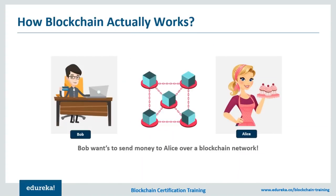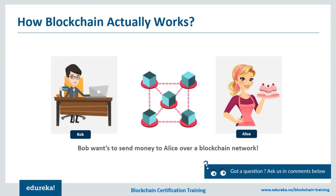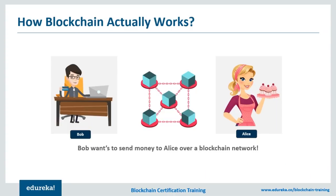Now let's see what happens under the hood in a computer when you initiate a transaction on a blockchain network. When Bob decides to send Alice the money, he publicly broadcasts his intent to the network. But how is the network supposed to believe the integrity of the message? Anyone on the network could have just broadcasted the intent without Bob's consent. This is where the first bit of cryptography comes into play. The way this problem is solved is by generating a unique digital signature for every transaction, using asymmetric cryptography.